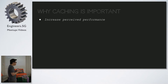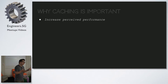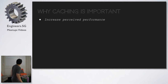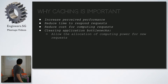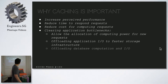Caching increases perceived performance. Technically, performance is the number of instruction sets the CPU runs — the only ways to make it run faster are to buy a faster CPU or reduce your instruction set. Caching increases perceived performance by reducing the number of instructions you need to run, reducing the time to respond to requests, reducing cost for computing power, clearing application bottlenecks, allowing web servers to process new requests instead of the same request over and over, and offloading I/O to a faster storage.